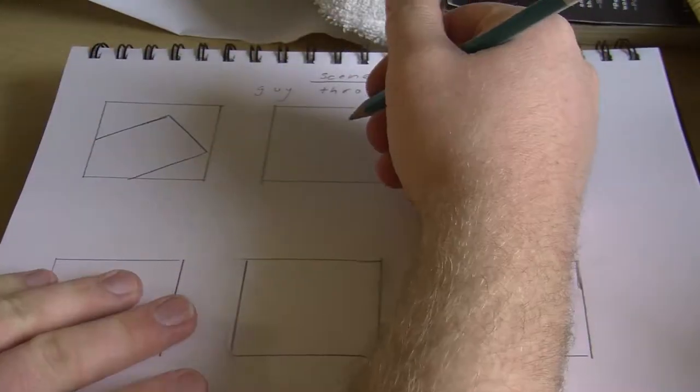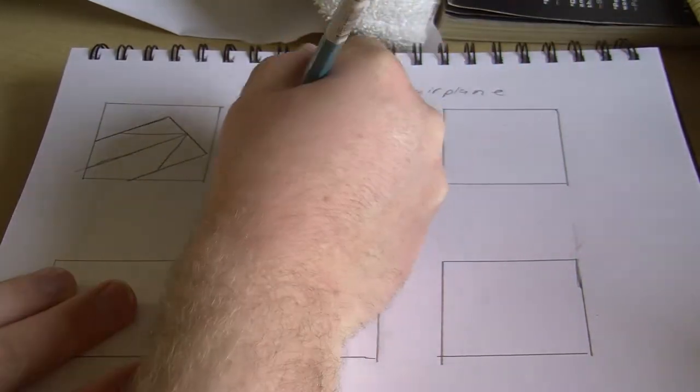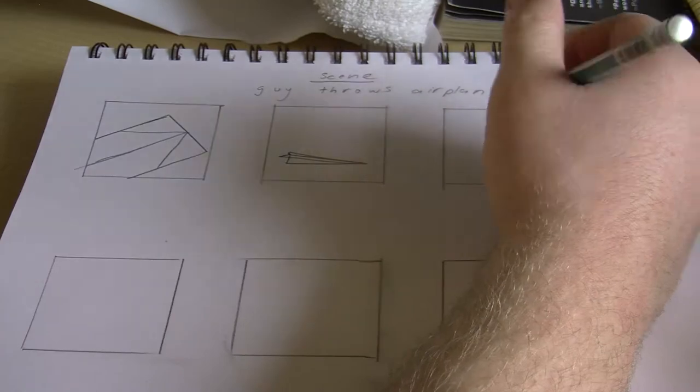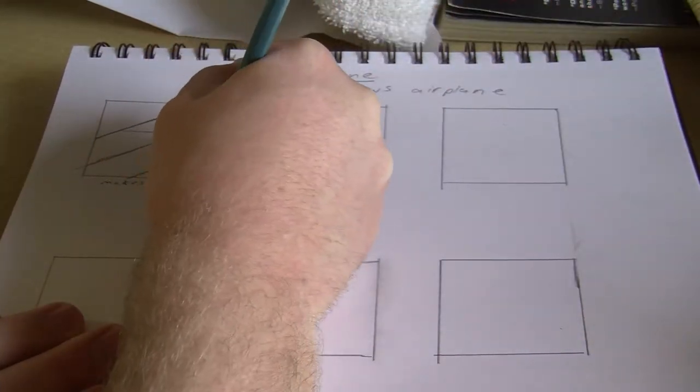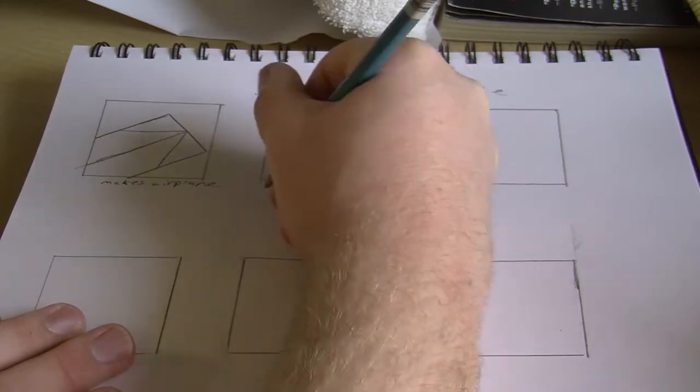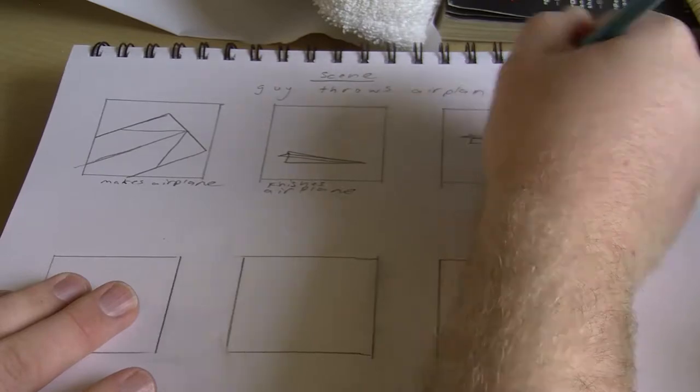So what you're going to want to do is, basically the point of a storyboard is to plan out the shots that you want to get before you go to shoot. So what you're going to do is draw out six shots - let's just say our video is only a six shot video.